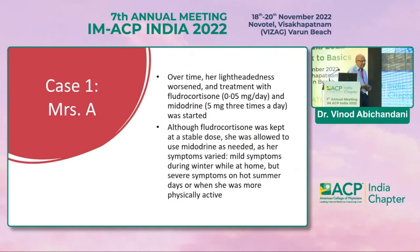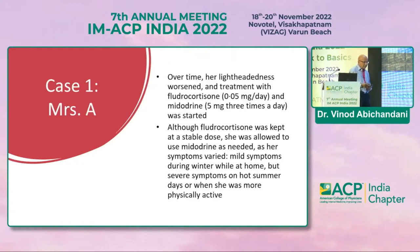Over time her lightheadedness worsened and treatment with fludrocortisone 0.05 mg per day and midodrine 5 mg three times a day was started. Fludrocortisone was kept at a stable dose while she was allowed to adjust midodrine as needed, since her symptoms varied — mild during winter while at home but severe on hot summer days or when more physically active.